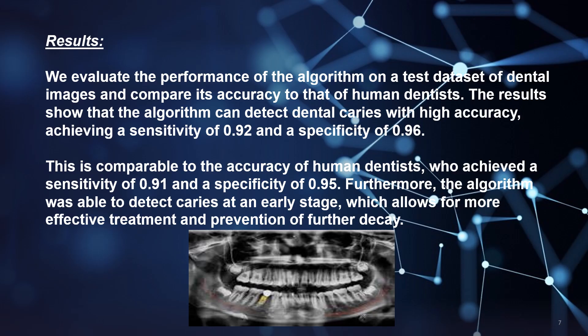The results of this study show that we evaluated the performance of the algorithm on a test database of dental images and compared its accuracy to that of a human dentist. The algorithm can detect dental caries with high accuracy, achieving a sensitivity of 0.92 and specificity of 0.96. This is comparable to a human dentist who achieved a sensitivity of 0.91 and specificity of 0.95. Furthermore, the algorithm was able to detect dental caries at an early stage, allowing for more effective treatment and prevention of further decay.